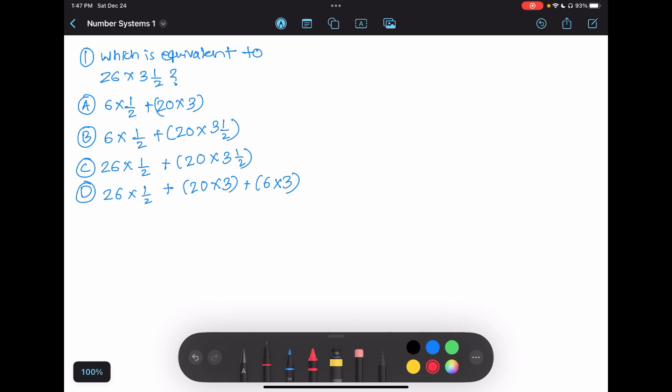Let's look at the first problem from the number system. Here we have 26 × 3½ is equivalent to which of these: A, B, C, or D? One of the most important things to remember...